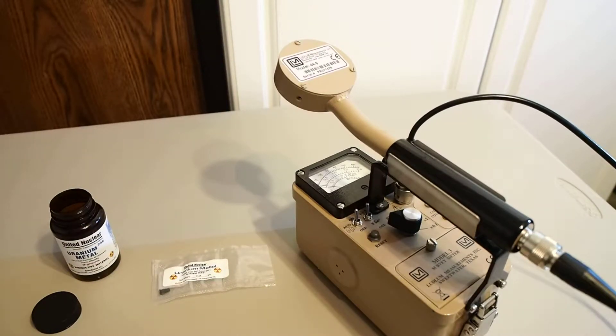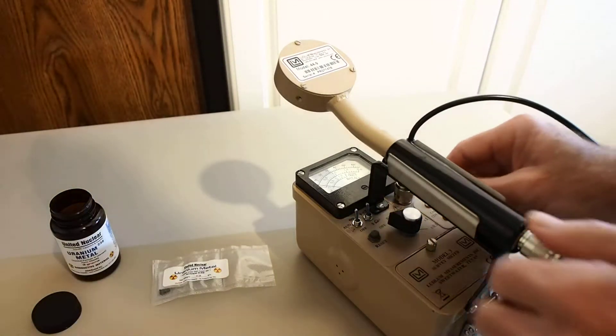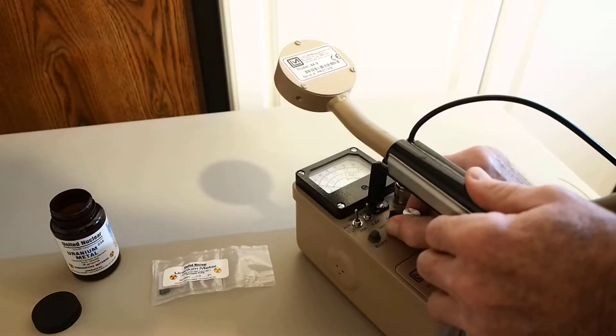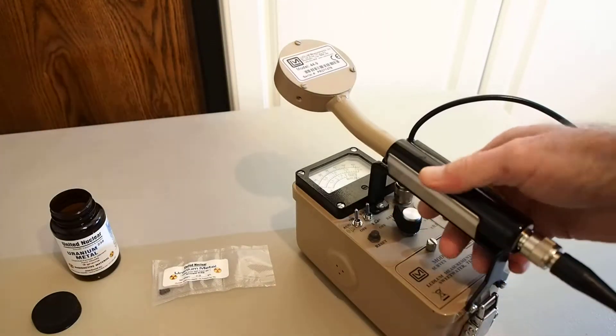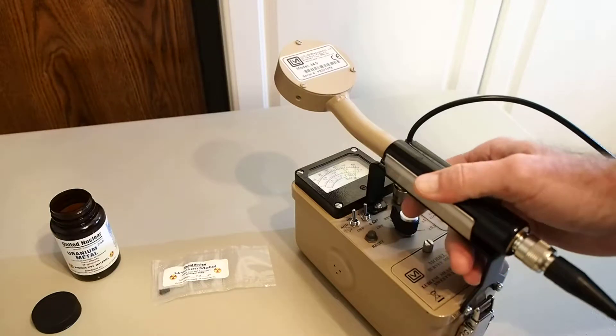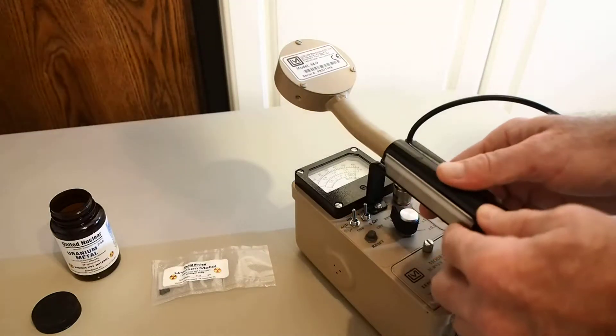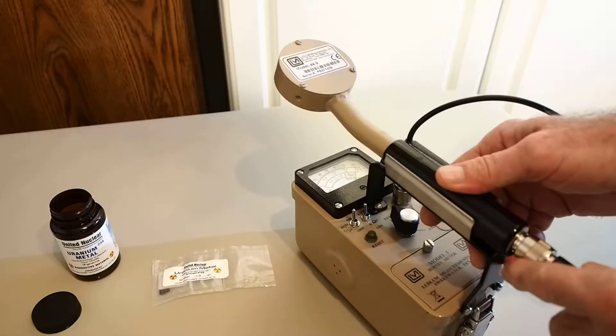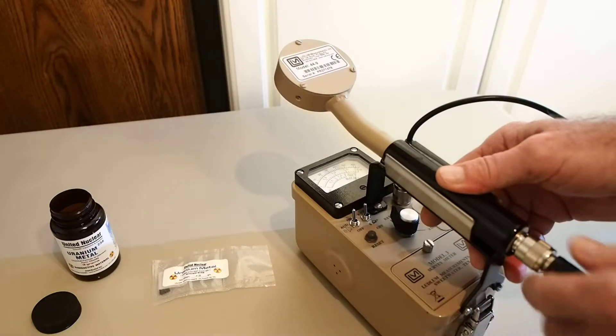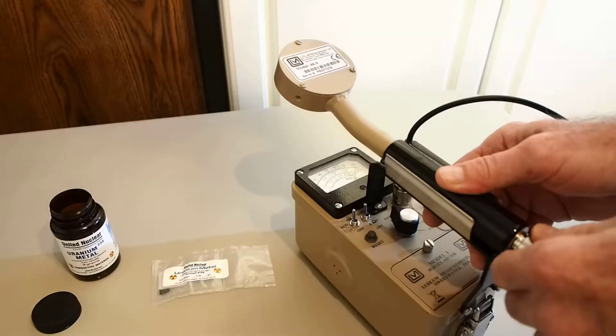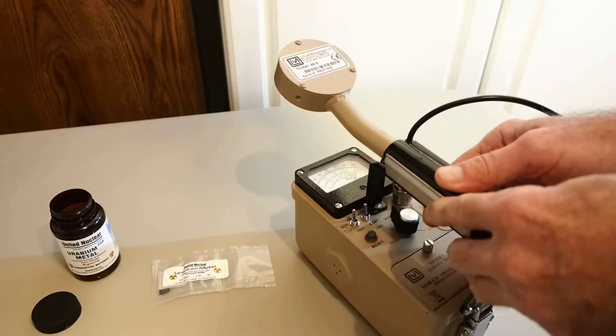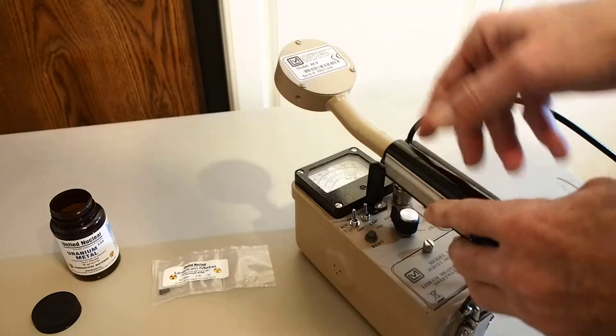First of all, we'll turn our survey meter on, perform a battery check. Battery check is indicating positive or good batteries. We're getting some residual indicators of background radiation plus some from the specimen we're going to measure because we're in relative close proximity.